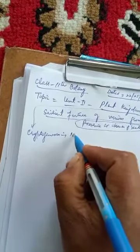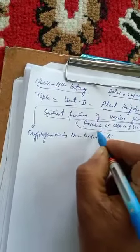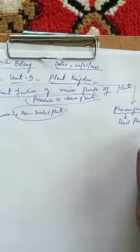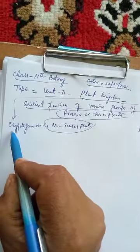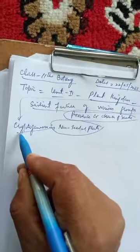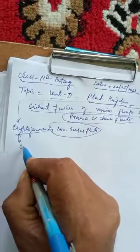Cryptogamae means non-seed plants — those plants which do not bear seeds are called Cryptogamae. Those plants which bear seeds are called Phanerogamae. Phanerogamae means seed plants, and they are also known as Spermatophytes. The term 'Cryptogamae' is derived from two Greek words: 'crypto' meaning concealed or invisible, and 'gamae' meaning marriage.